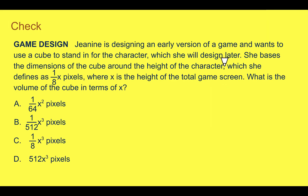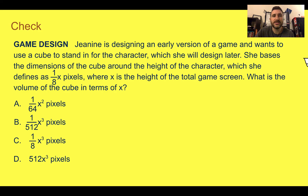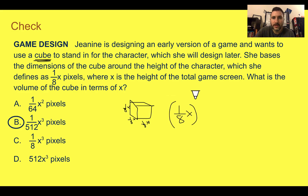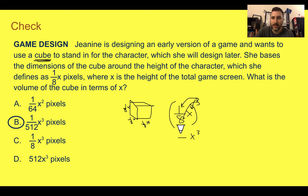Check your understanding — read through the situation and choose the best answer. Pause the video now and complete the check. You should have picked B: 1 over 512 x to the third power pixels. To figure this out, it is a cube, which means three dimensions. If each side is one-eighth x, then we raise that to the third power: (one-eighth x) to the third. Distributing: one-eighth to the third and x to the third. X to the third is easy. For the fraction, distribute to the top and bottom: 1 times 1 times 1 is still 1, and 8 times 8 is 64, times 8 again is 512. So the answer is 1 over 512 times x to the third.